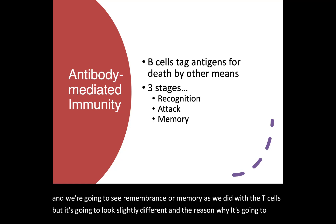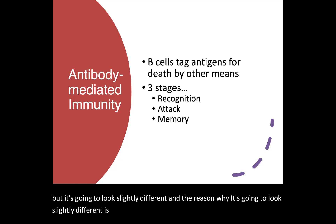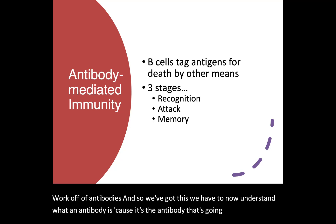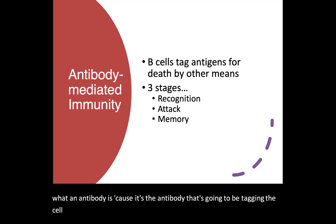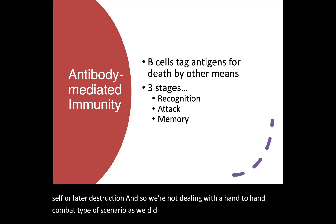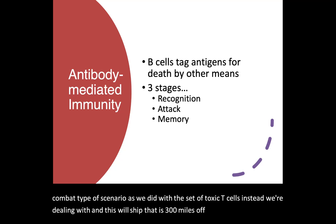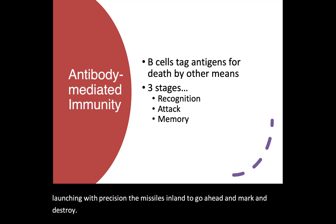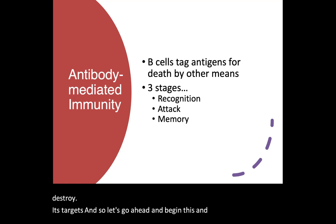The reason why it's going to look slightly different is because B cells work off of antibodies. We have to understand what an antibody is, because it's the antibody that's going to be tagging the cell for later destruction. We're not dealing with a hand-to-hand combat scenario as we did with cytotoxic T cells. Instead, we're dealing with a missile ship that is 300 miles off the coast, launching with precision the missiles inland to mark and destroy its targets.